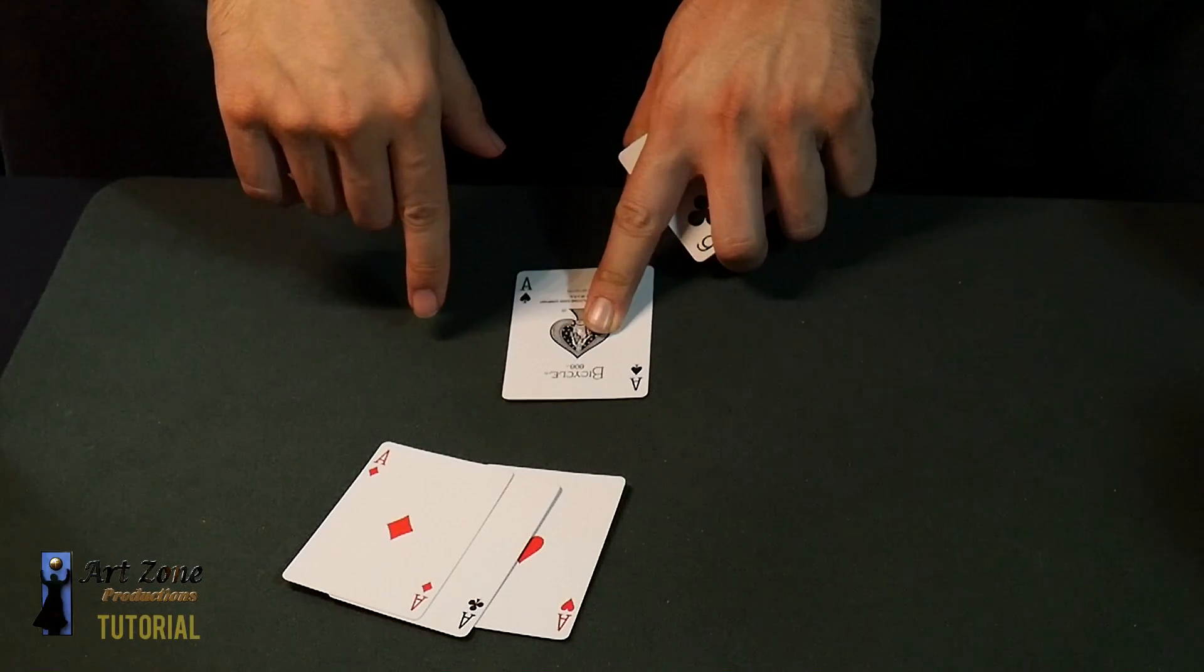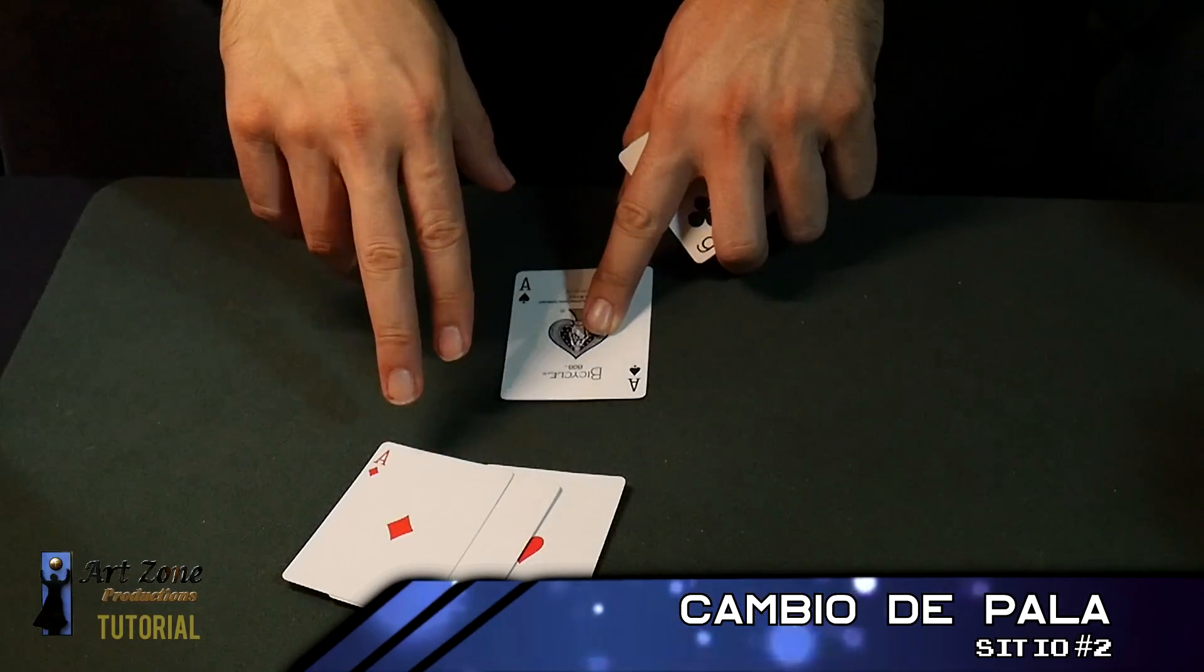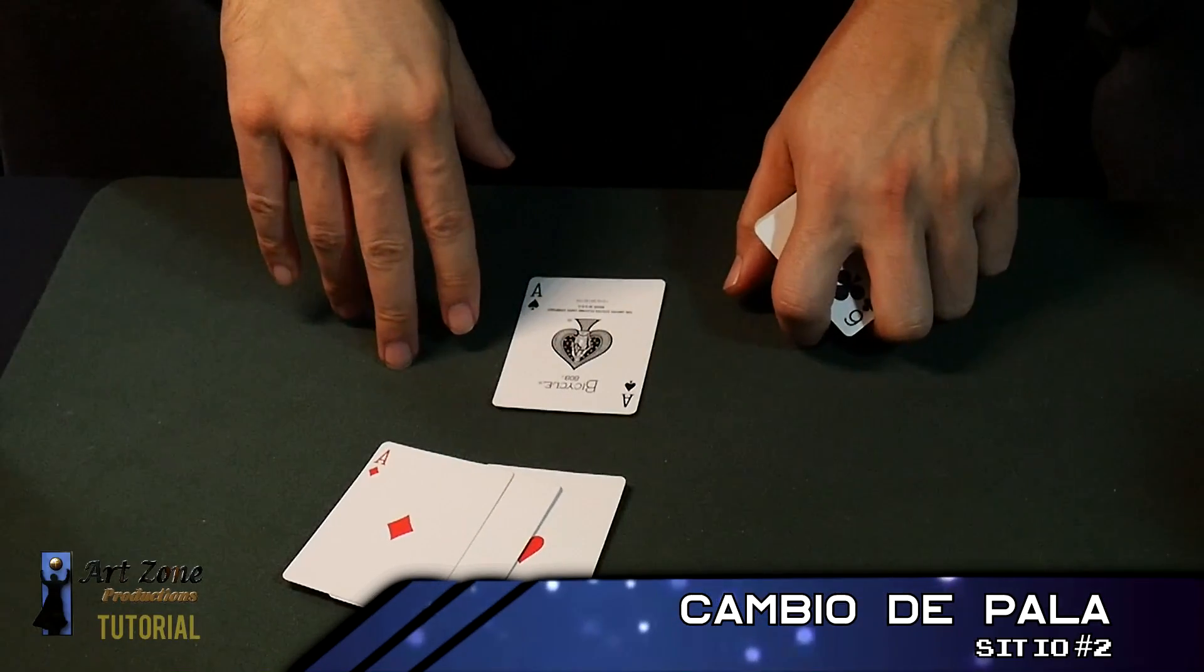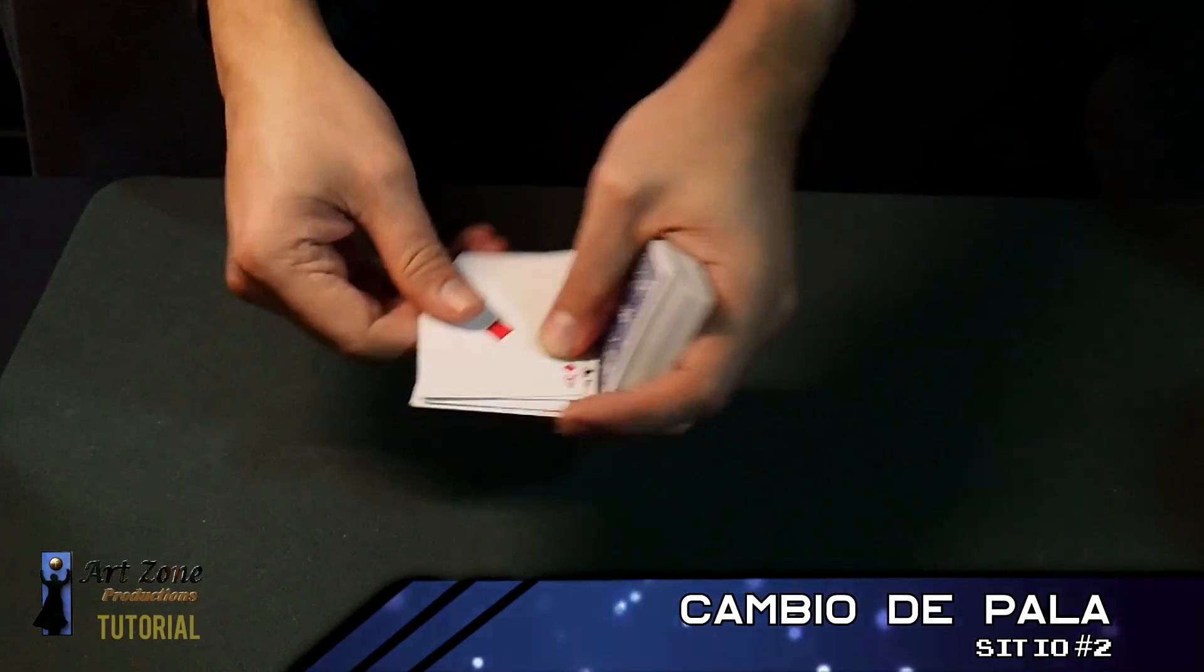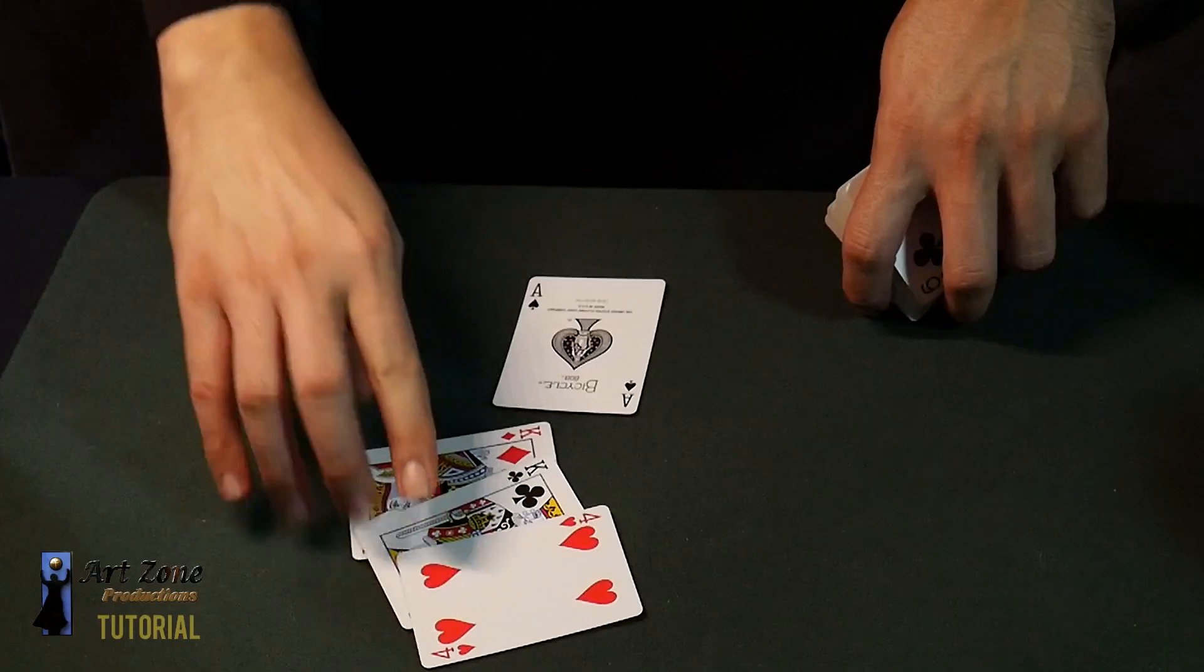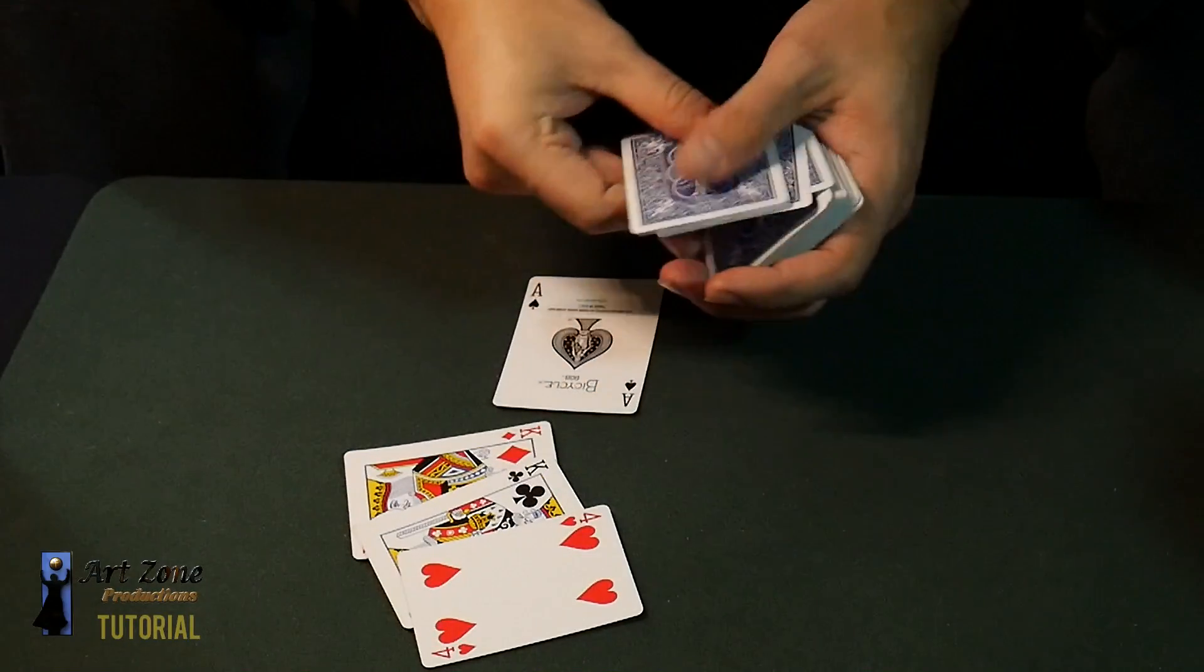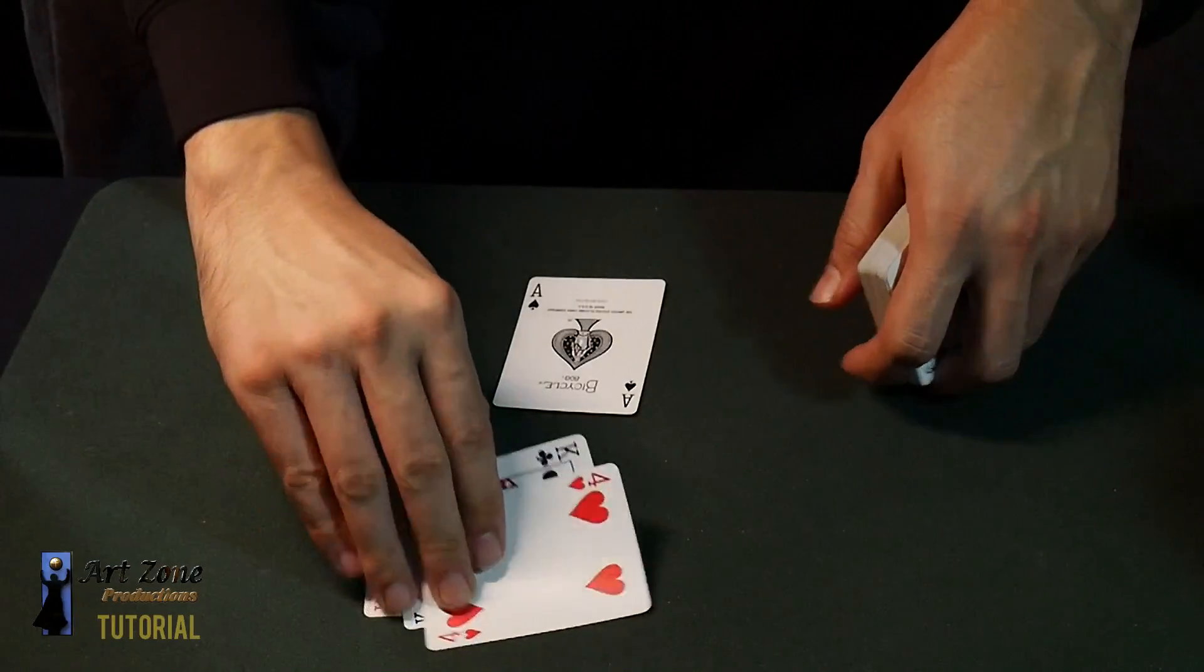And here I'm going to do a technique. This second technique is the cambio de pala technique. If you want to know how this technique is done, just check the description of this video. Here I already put the three indifferent cards, changing the packets, which is, they're here right on top of the deck. Once I make the change, I leave them there.